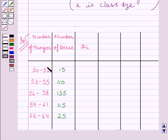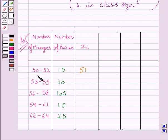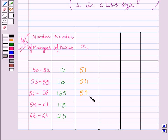Let us recall that class mark is equal to upper class limit plus lower class limit upon 2. Now in this interval, 52 is the upper class limit and 50 is the lower class limit. So 52 plus 50 upon 2 is equal to 51. Similarly, we can find the class mark for this class interval: 55 plus 53 upon 2 is equal to 54. For this interval, the class mark is 57, since 58 plus 56 upon 2 is equal to 57.